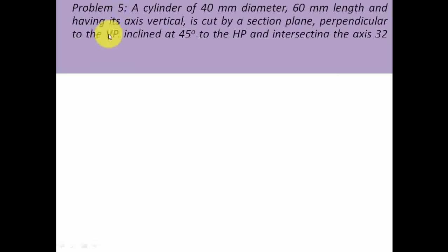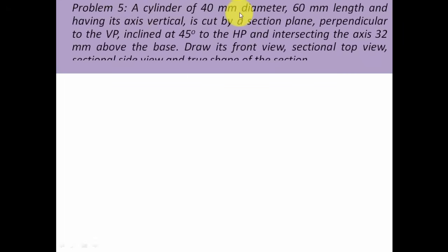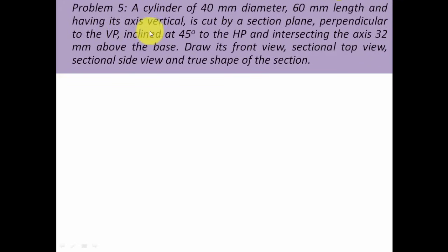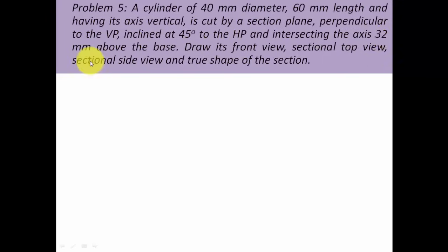The problem goes like this: a cylinder of 40 mm diameter, 60 mm length, having its axis vertical, is cut by a section plane perpendicular to the VP, inclined at 45 degrees to the HP and intersecting the axis 32 mm above the base. Draw its front view, sectional top view, sectional side view, and true shape of the section.